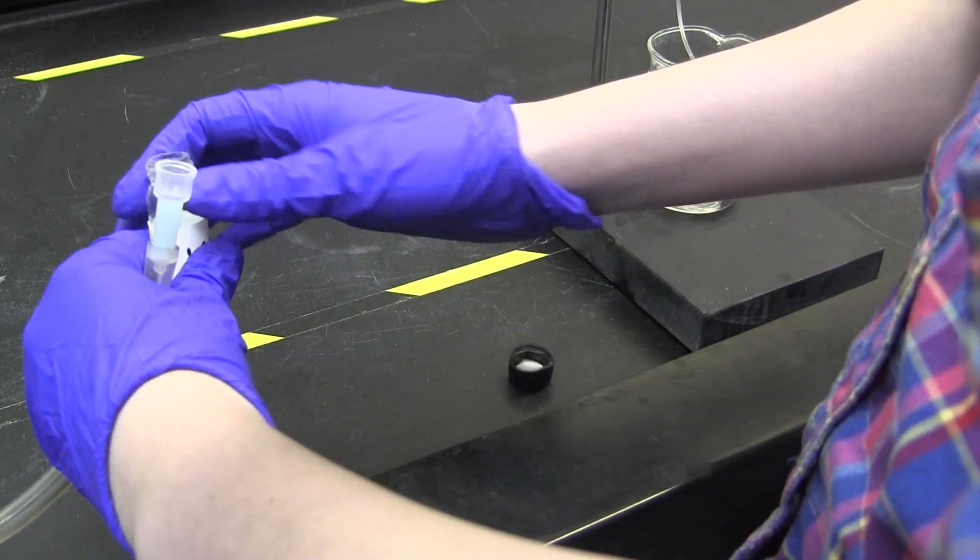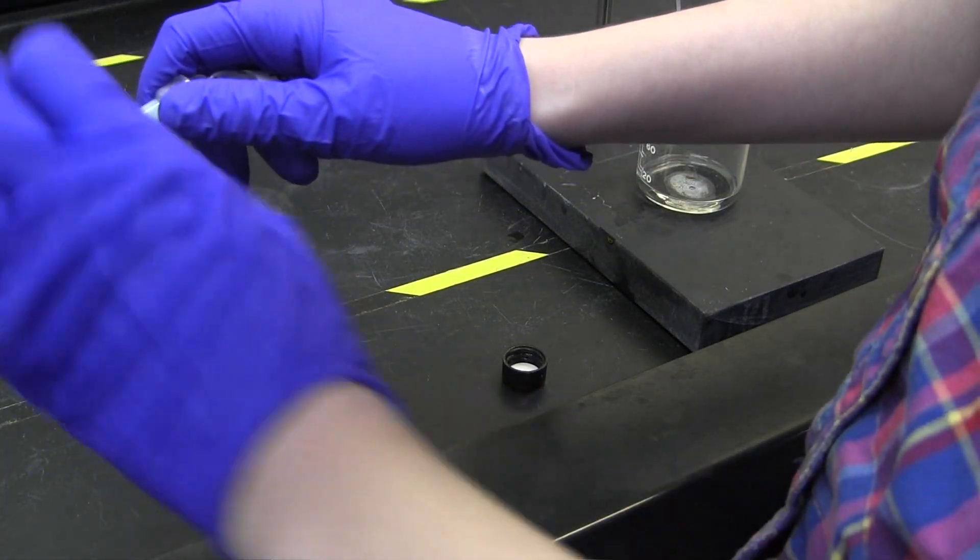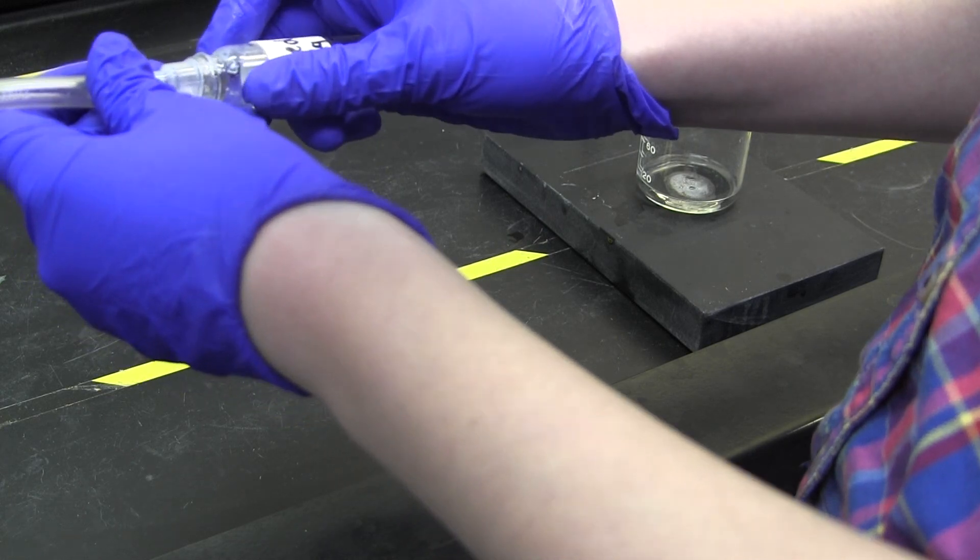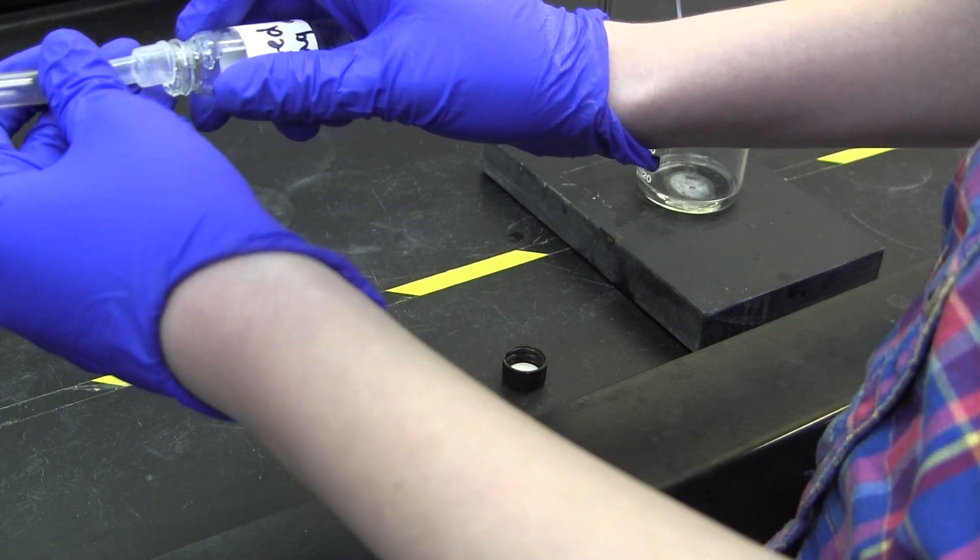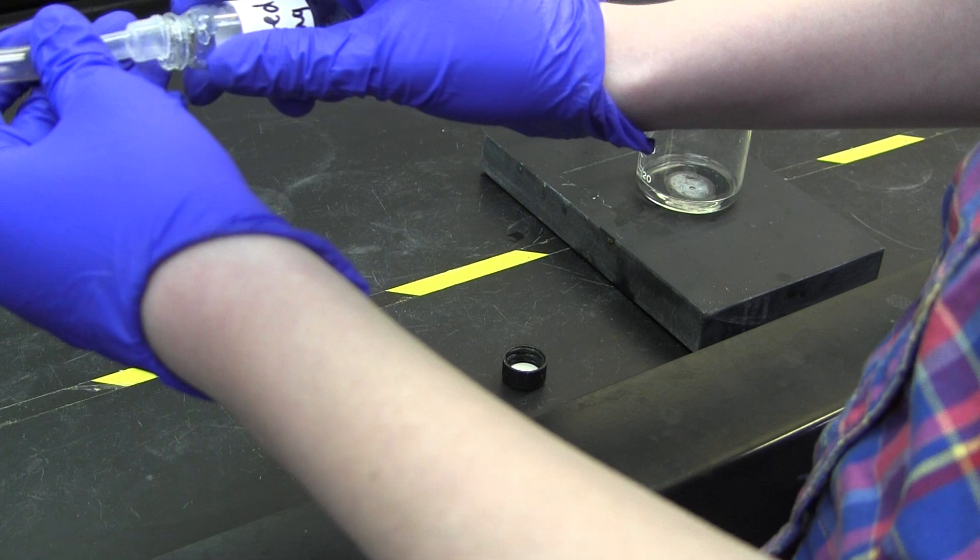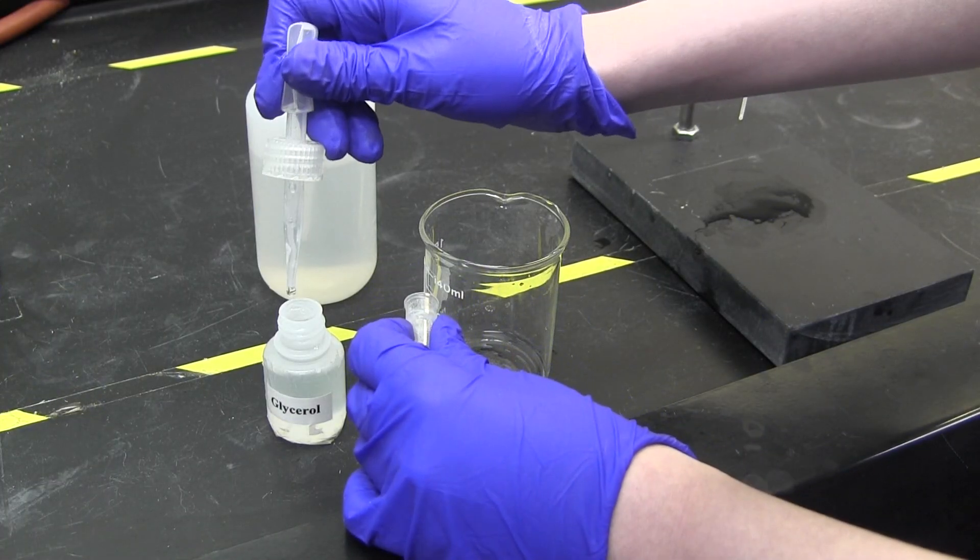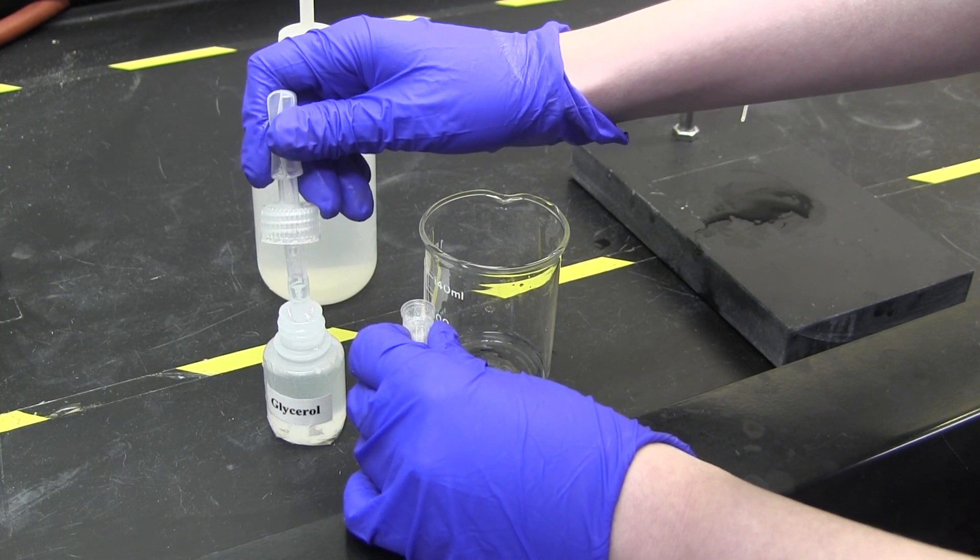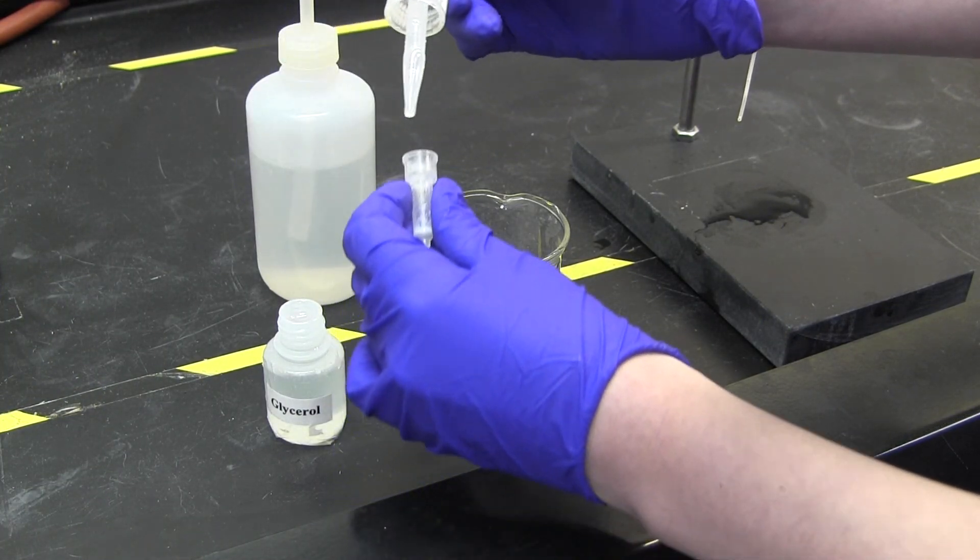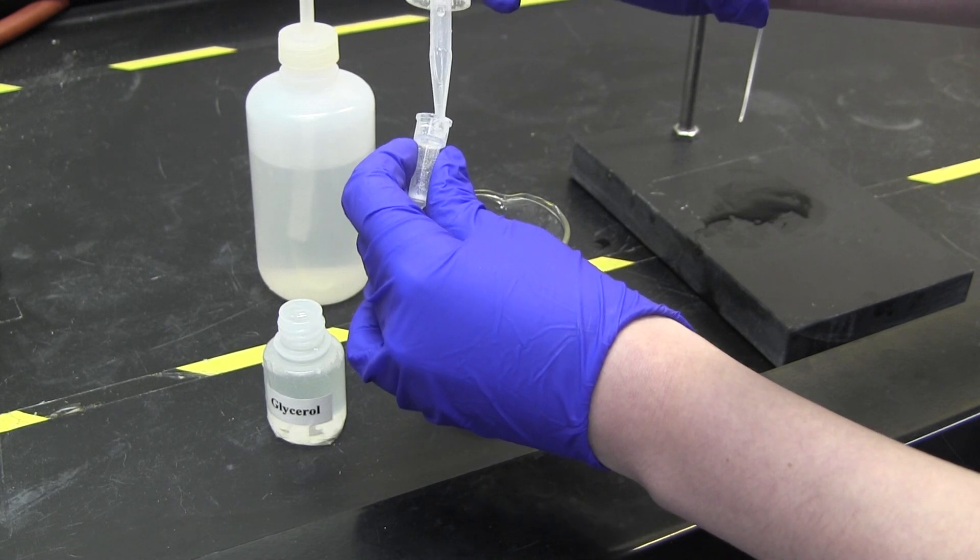Finally, clean your used column by blowing the resin into the appropriate color-coded waste container with nitrogen. Your TA will get the container for you, and it is very important that you use the correct one. Then, fill the column with glycerol and rinse it clean with deionized water. This will prepare the column for the next student. The glycerol will be provided by your TA.